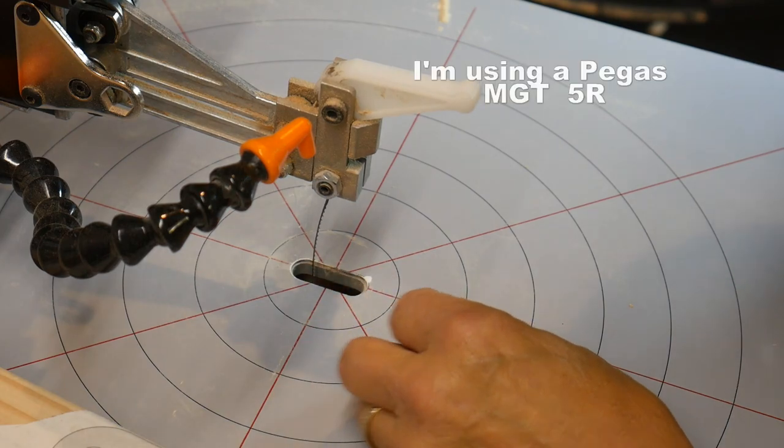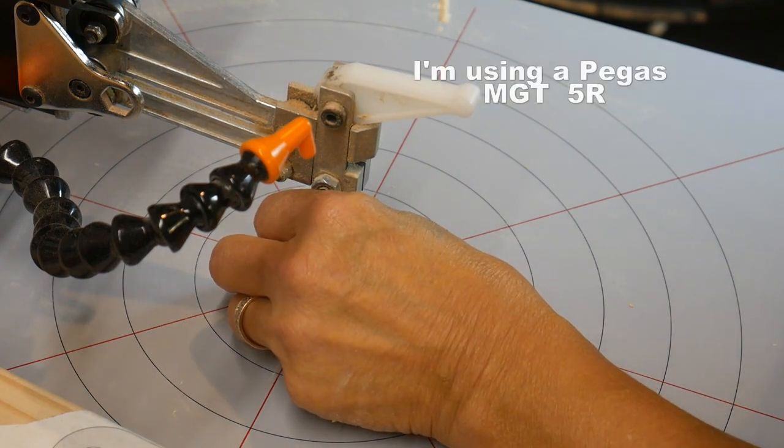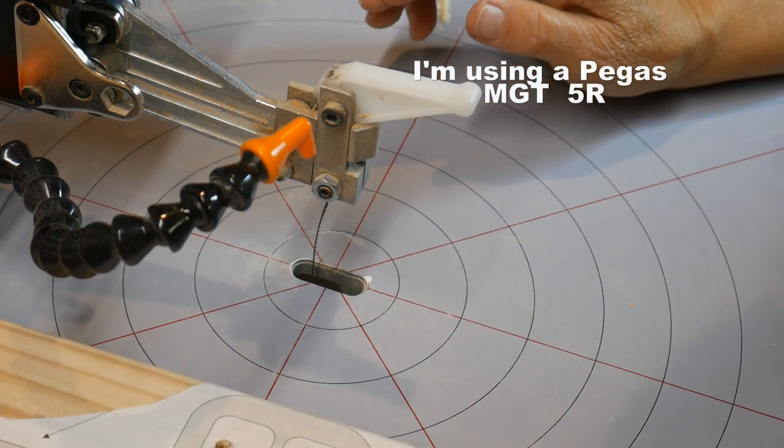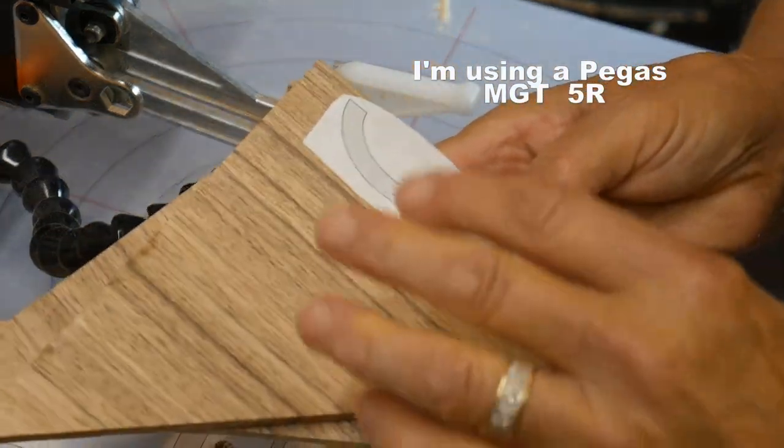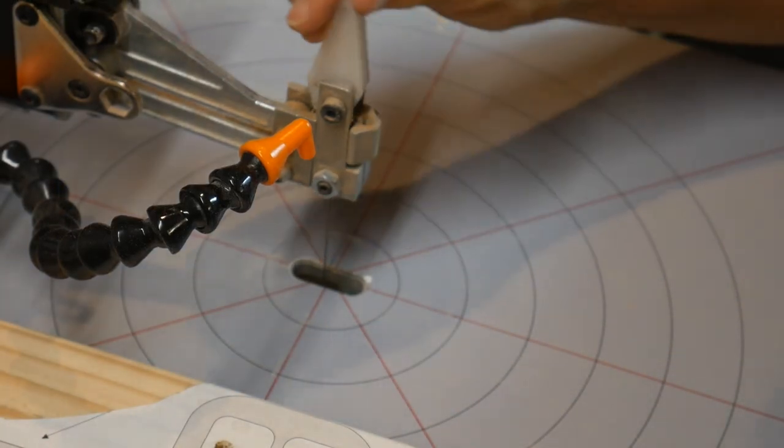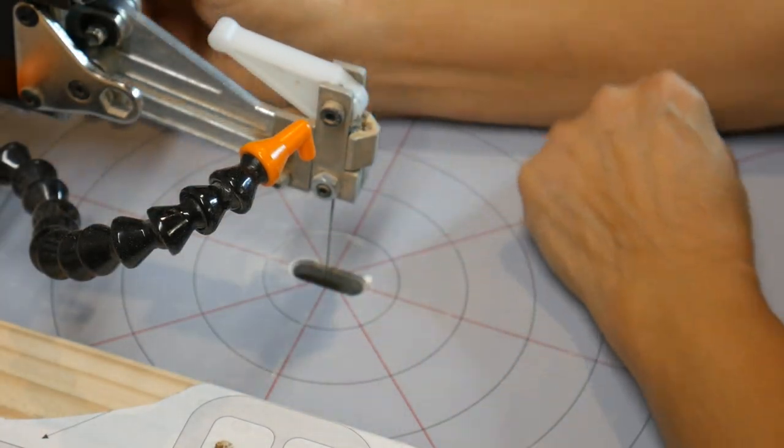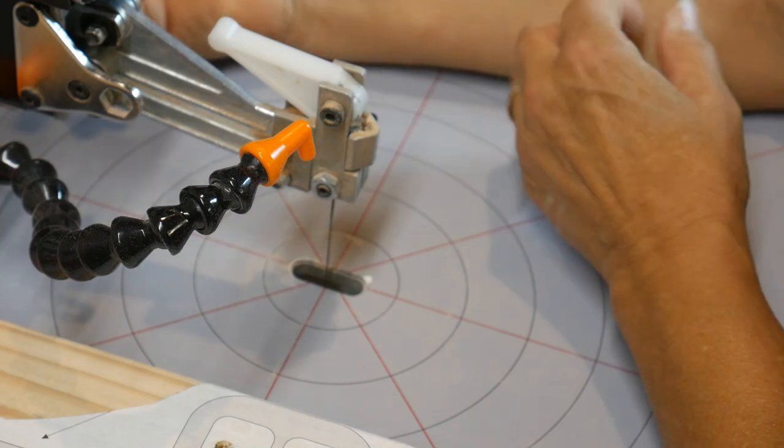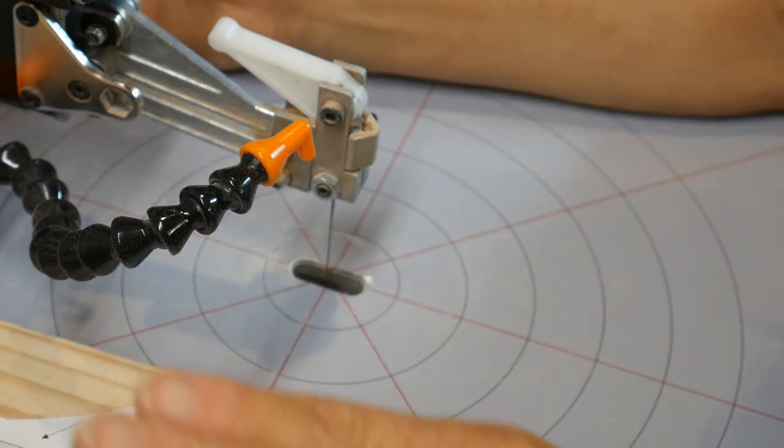My blade of choice is a Pegas MG T5. This is an inch and a half softwood and this is a quarter of an inch hardwood and it will do fine with this. If you would prefer to have a number seven or number nine, I mean that's entirely up to you.